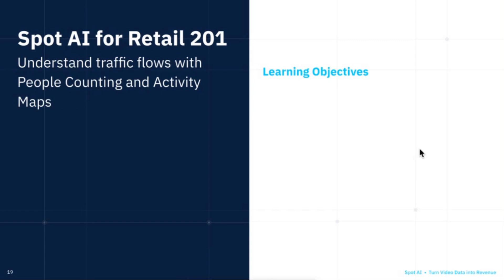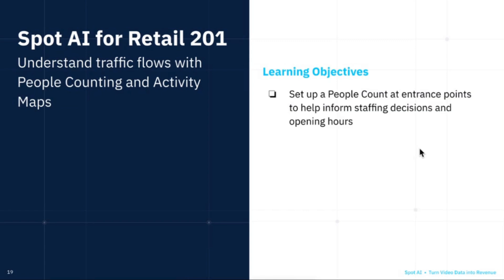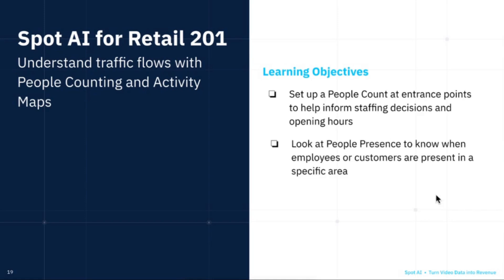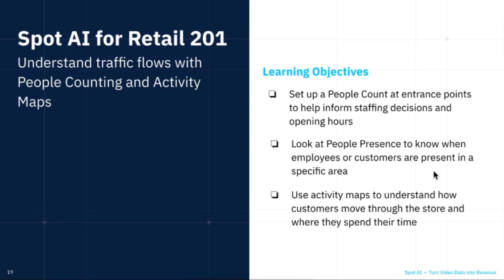We'll go over how to set up a people count at entrance points to help inform staffing decisions and opening hours, look at people present to know when employees or customers are present in a specific area, and use activity maps to understand how customers move through the store and where they spend their time.